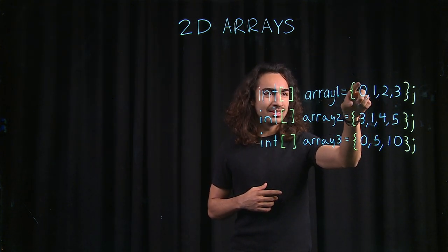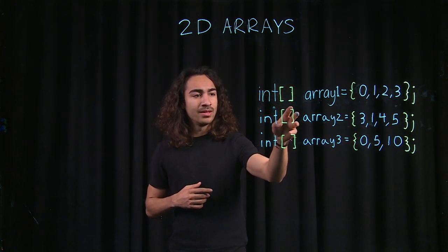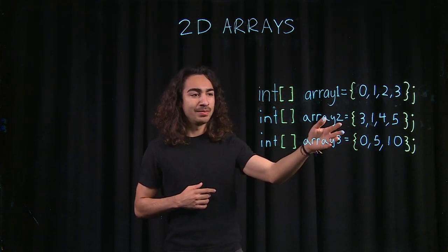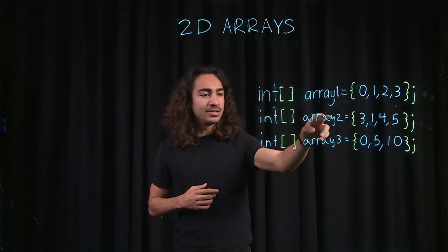So we put the data inside these little curly brackets here. Now, I have 3 regular arrays, or 1D arrays, so I declare them array1, array2, and array3.